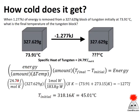Plugging in: specific heat 24.79 joules per mole Kelvin, converting grams of tungsten to moles, temperatures in Kelvin with the 273.15 factor added, and energy converted from kilojoules to joules. Solving for x gives an initial temperature of 318.16 Kelvin, or subtracting 273.15, that's 45.01 degrees Celsius. As the double check: starting at 74°C, removing energy, and ending at 45°C — the direction of temperature change makes sense.